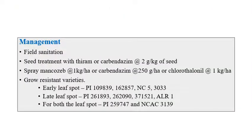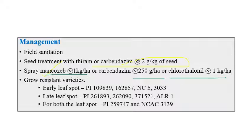For management of both diseases, field sanitation along with seed treatment using thiram or carbendazim at 2 grams per kilogram of seed is recommended. Foliar spray with Mancozeb at 1 kg per hectare, or carbendazim at 250 grams per hectare, or Chlorothalonil at 1 kg per hectare can be recommended.